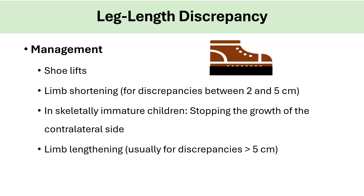Treatment options for leg length discrepancies: if no symptoms and less than 2 cm, no treatment. Otherwise, the treatment options are shoe lifts for the shorter side. Limb shortening — we can shorten the longer side for discrepancies between 2 and 5 cm. In skeletally mature children, we can stop the growth of the contralateral side. Limb lengthening is usually for discrepancies more than 5 cm.